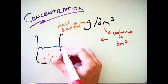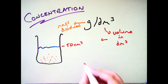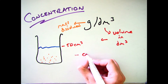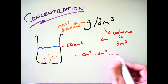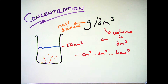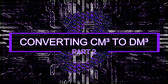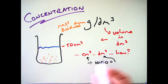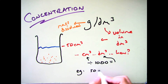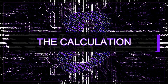What you're used to using is centimetres cubed, but what we need to be doing is using decimetres cubed. The question is: how can we convert, for example, 50 centimetres cubed into decimetres cubed? To convert from centimetres cubed into decimetres cubed it's nice and simple — all you need to do is take whatever volume you have in centimetres cubed and divide it by 1,000. So 50 centimetres cubed divided by 1,000 gives you 0.05 decimetres cubed.